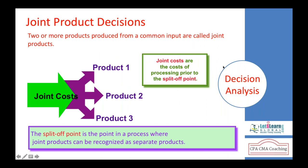This kind of decision mostly takes place in joint product decisions. A joint product is a product derived from a joint operation where two or more products are produced together. We identify that different products are produced from this joint operation.